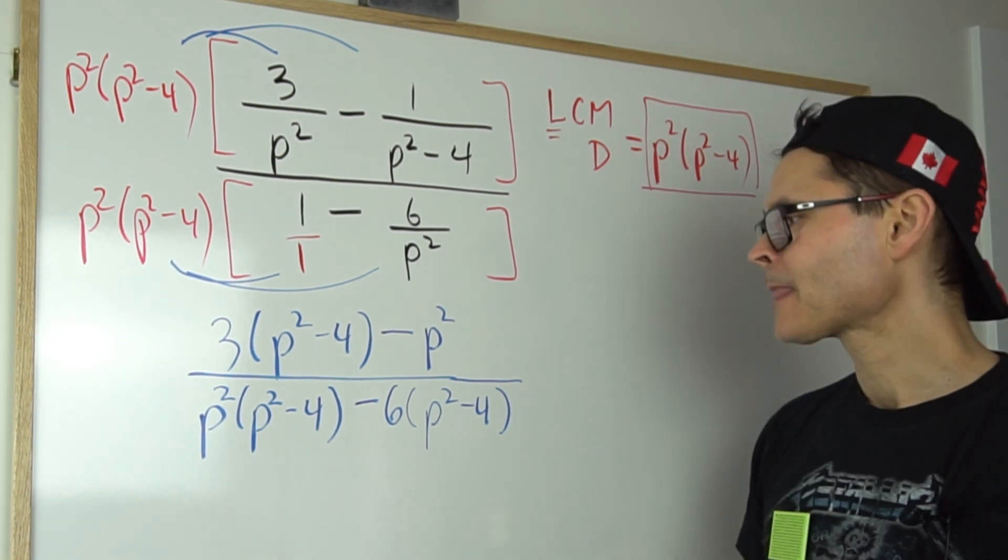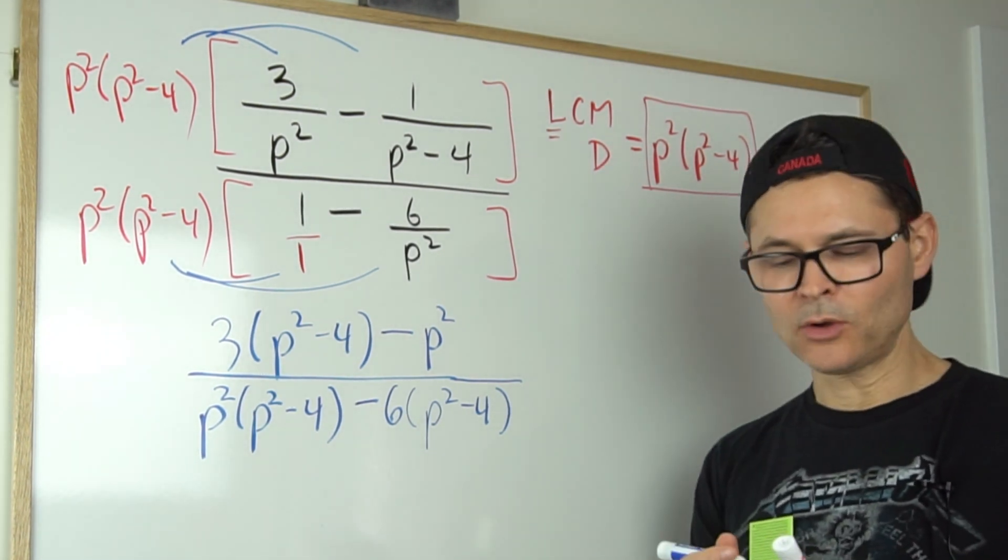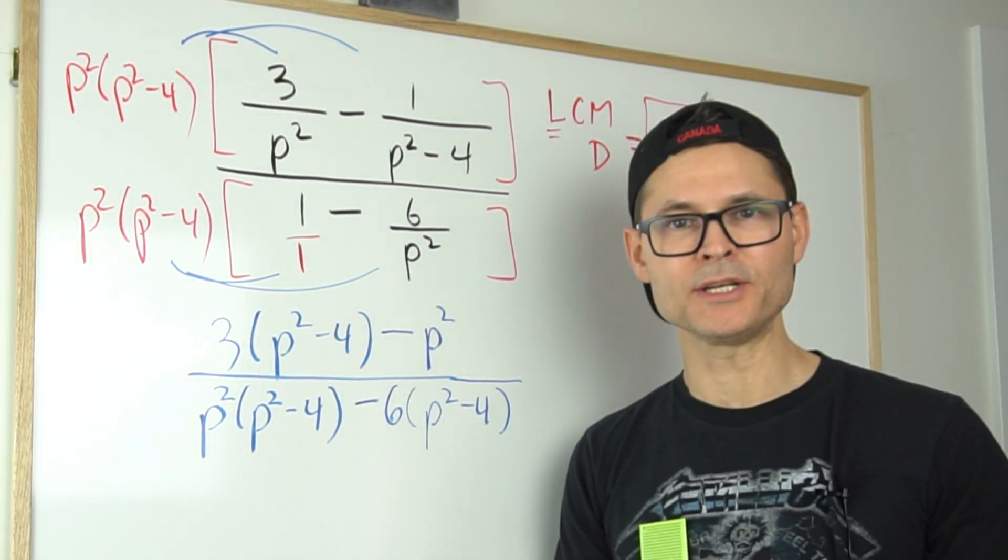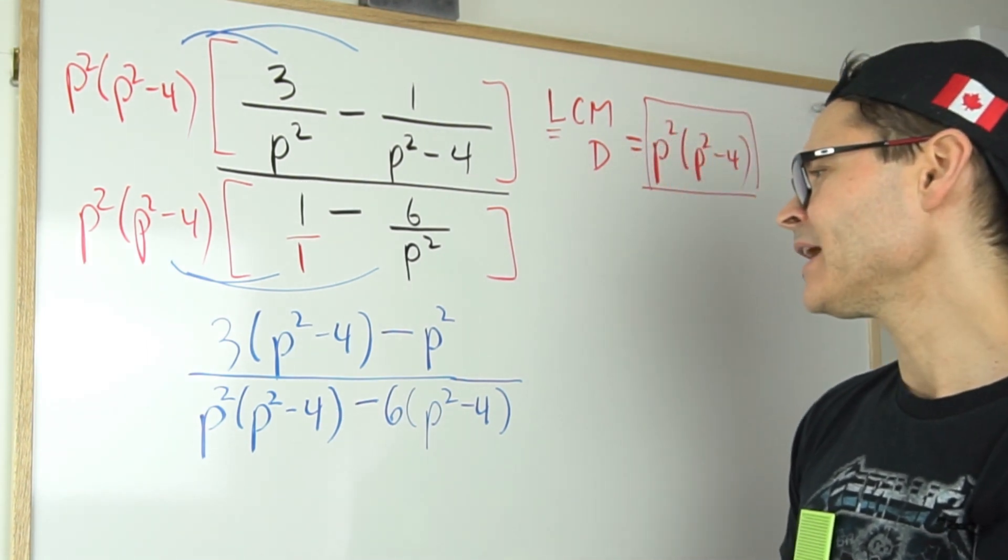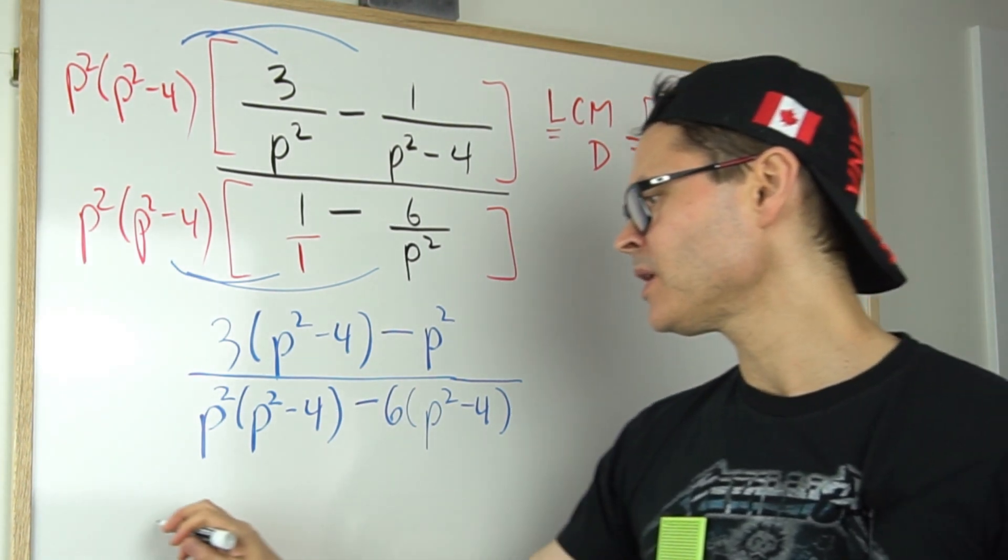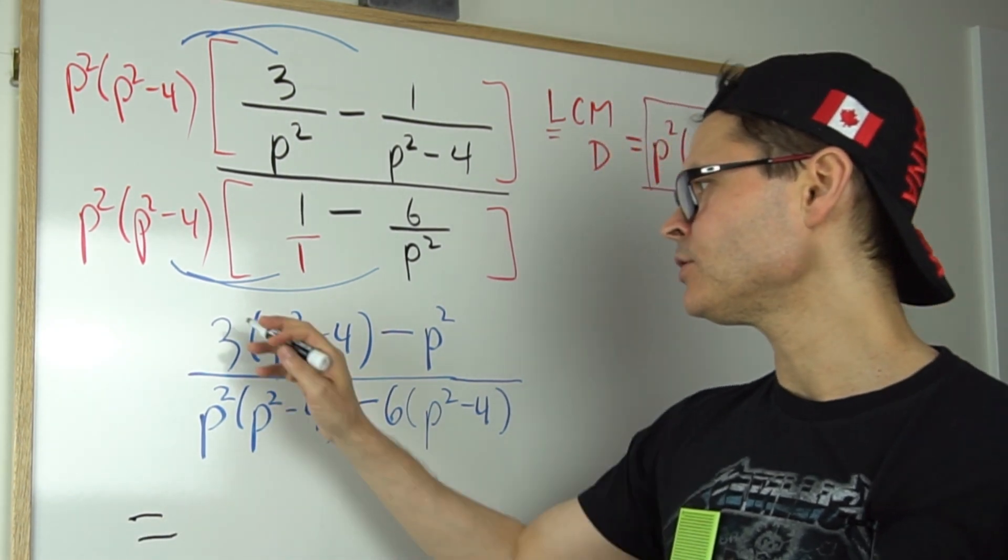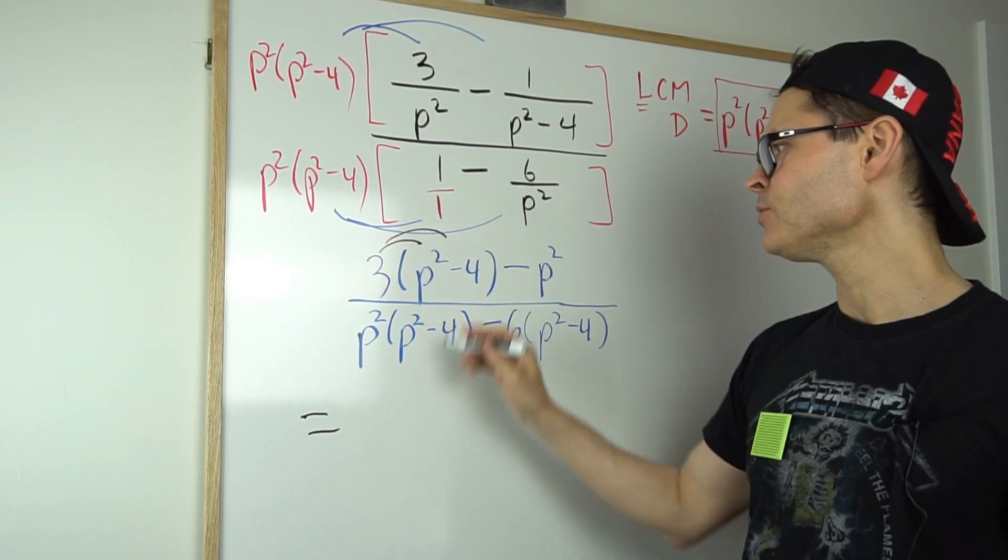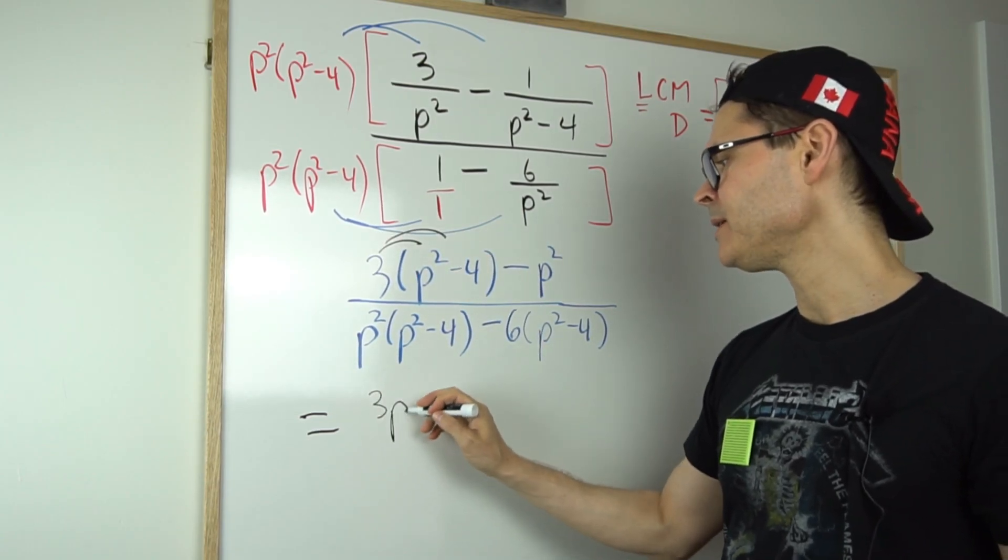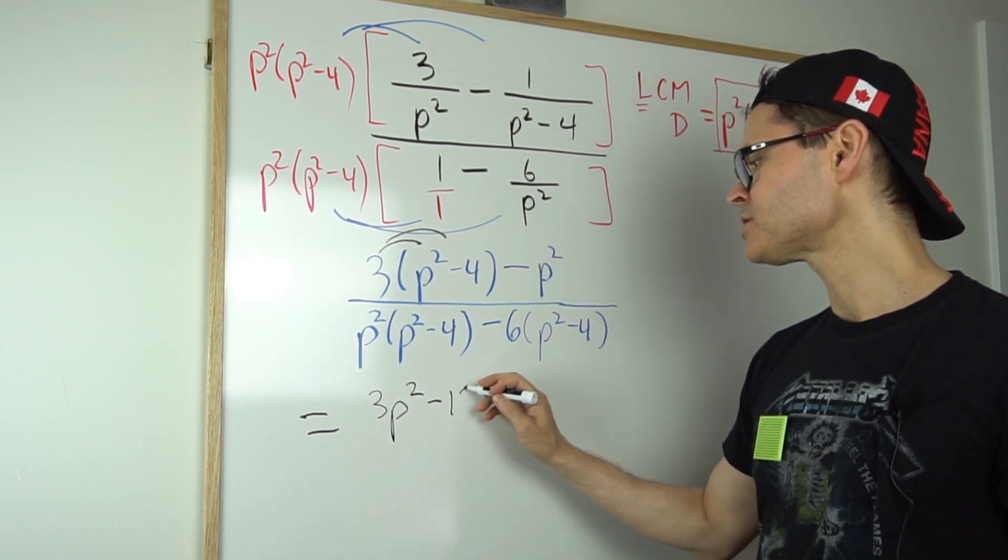All right, well now I've at least got only one fraction. I don't have a bunch of fractions going on. So what I could do is simplify the numerator. In the numerator I could expand that through, and that's going to leave a three p squared minus 12—three times negative four is negative 12—minus p squared.